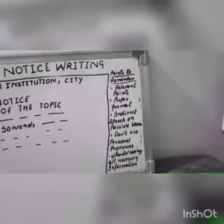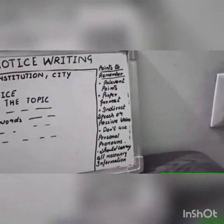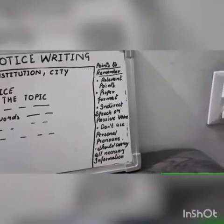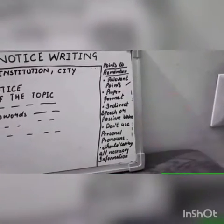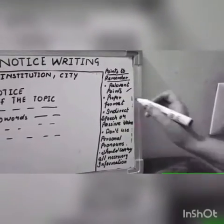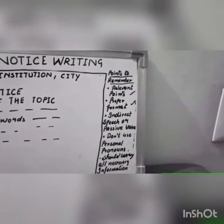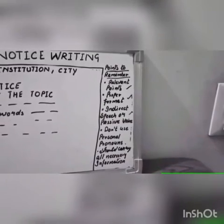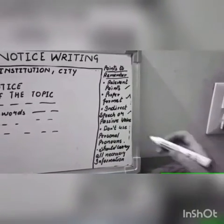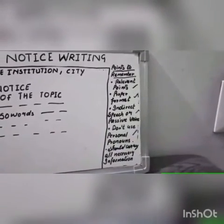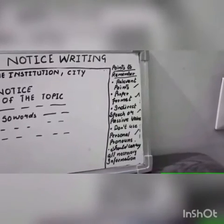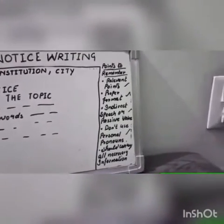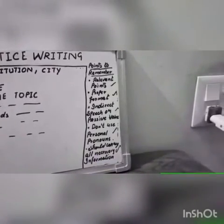Here are some points to remember. The ideal length of a notice is 50 words, so only relevant points need to be addressed. Present the notice in a proper format and try to write the notice in direct speech or passive voice only. Don't use personal pronouns like 'I' and 'we', and it should carry all necessary information — for example, if it's a meeting, the time, date, and agenda should be there.